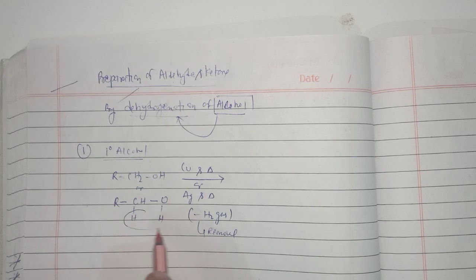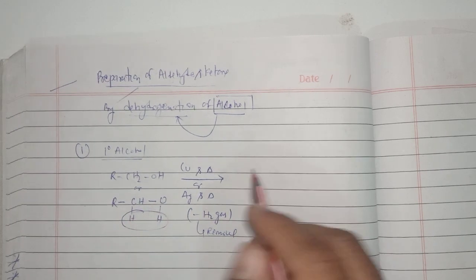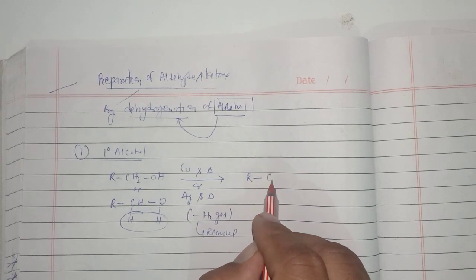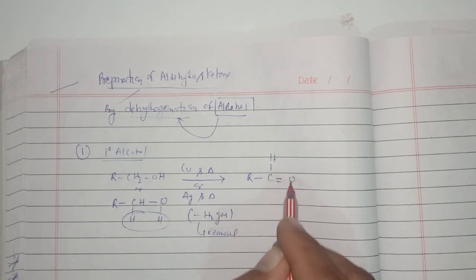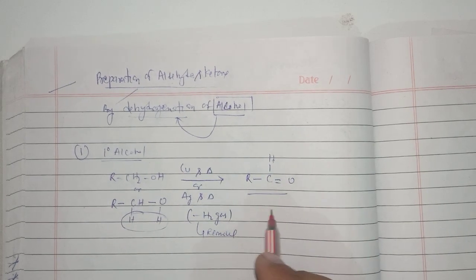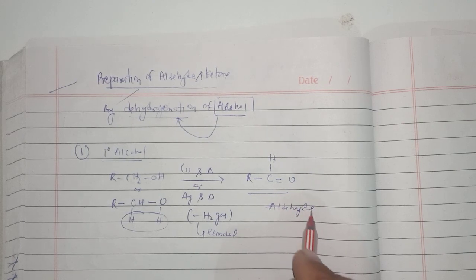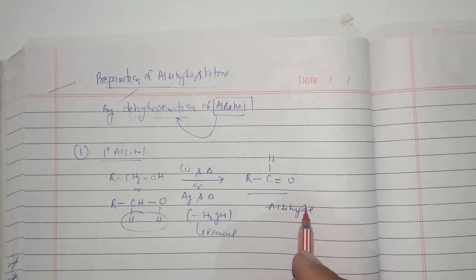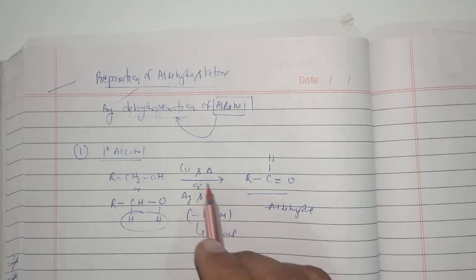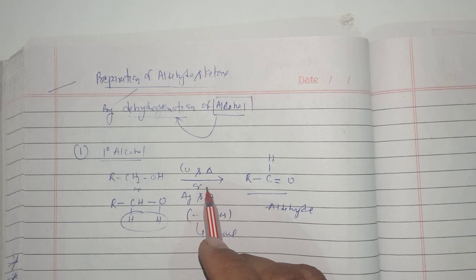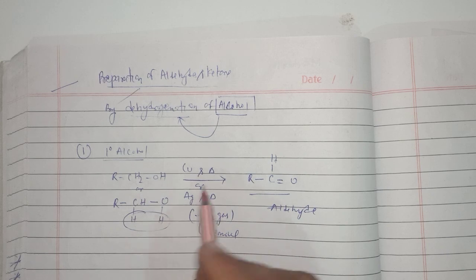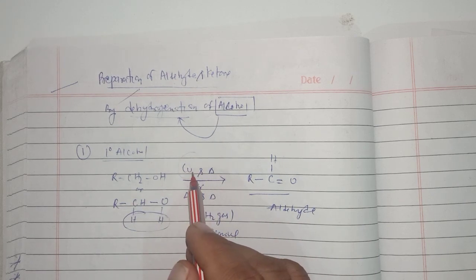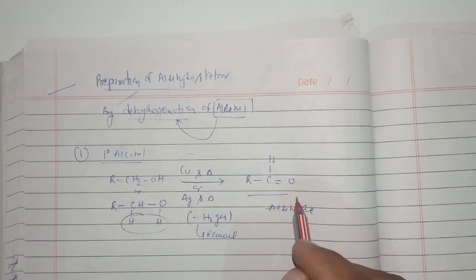There will be removal of hydrogen gas from the one-degree alcohol. These two hydrogen atoms are getting removed, so the final product will be RCH double bond O. In this way the aldehyde is getting formed by passing the vapors of the one-degree alcohol over copper under heating conditions.